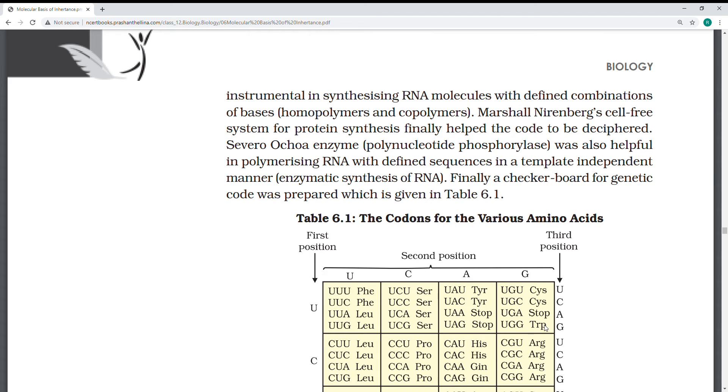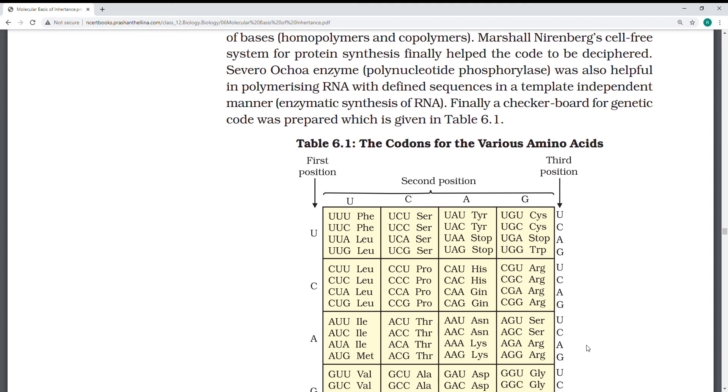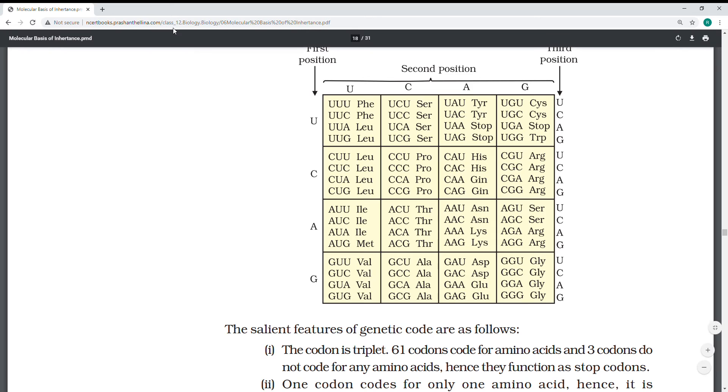Marshall Nirenberg's cell-free system and Severo Ochoa enzyme discovered the checkerboard for genetic code. If you see the codons for various amino acids in the tabular form - first they have given uracil, cytosine, adenine, guanine. You are combining this. If you see UUU, these three code for phenylalanine. UUC also codes for phenylalanine. UUA and UUG code for leucine. Every two codons can code for the same amino acid.